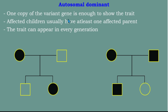The properties of autosomal dominant: one copy of the variant gene is enough to show the trait. If one allele is the dominant variant, the trait will be expressed in that individual. Affected children usually have at least one affected parent, and the trait can appear in every generation.